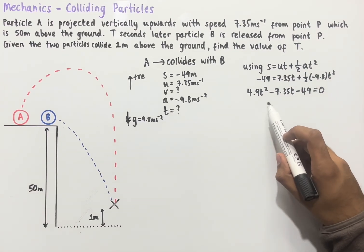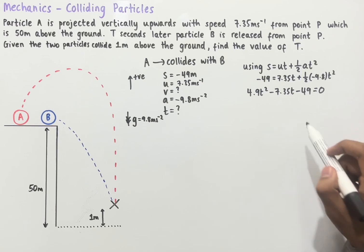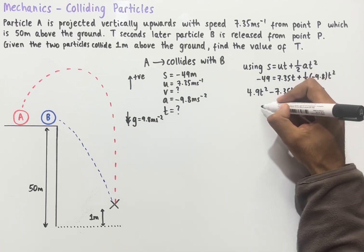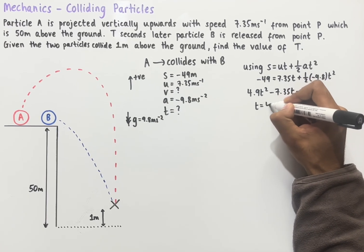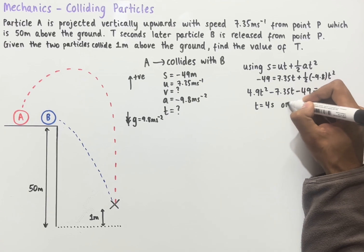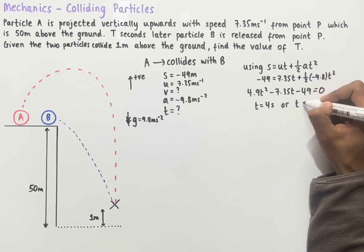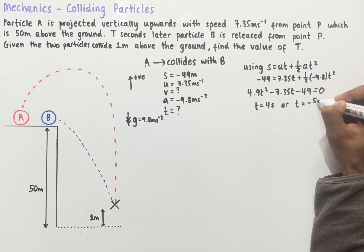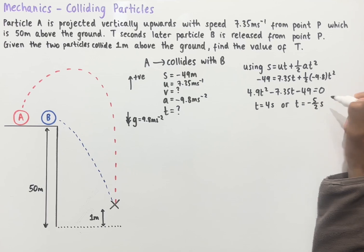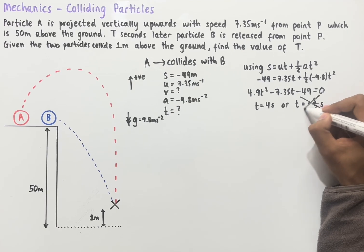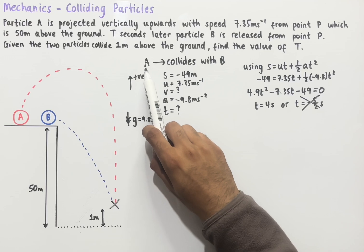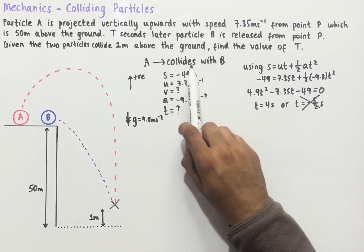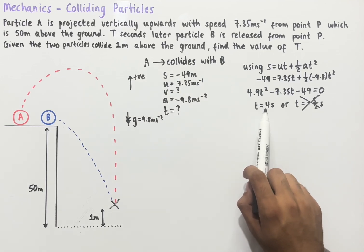Solving this quadratic equation using a calculator gives two values of T: the first is 4 seconds, and the second is minus 5 over 2 seconds. Since time cannot be negative, we rule out the negative value. Therefore the total journey time from when particle A is released to when it collides with B is 4 seconds.